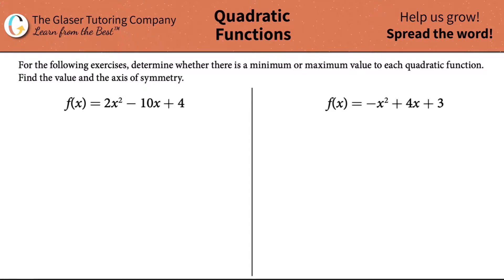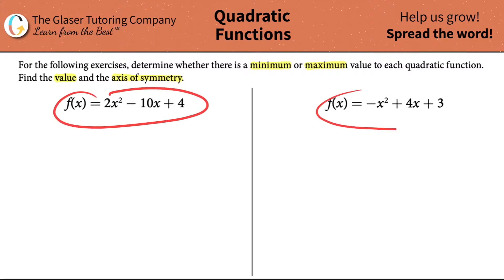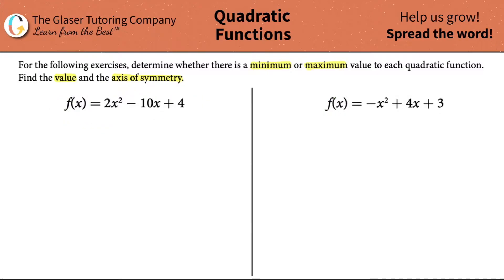For the following exercises, determine whether there is a minimum or a maximum value to each quadratic function, and then find that value and the axis of symmetry. So I have two quadratic functions here. Let's work with the one on the left first.